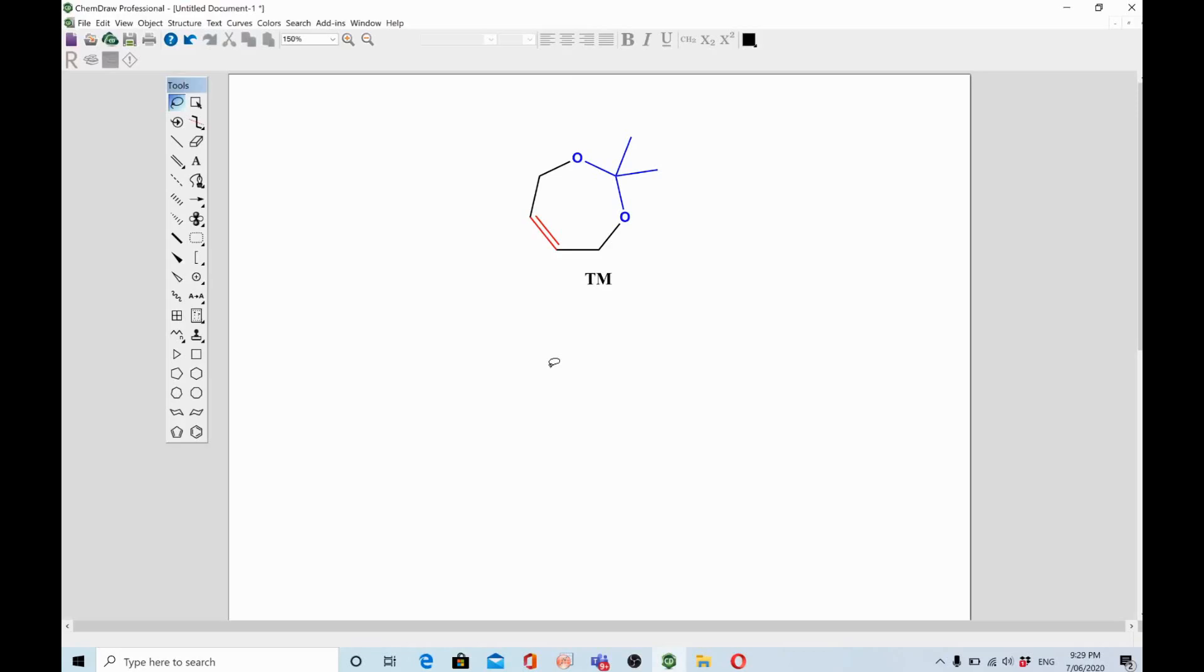Okay guys, in the last video I showed examples about alcohols, that was one functional group. In this video I am going to discuss two functional groups - when you face two functional groups, how you are going to use retrosynthetic analysis to reach your target molecule.